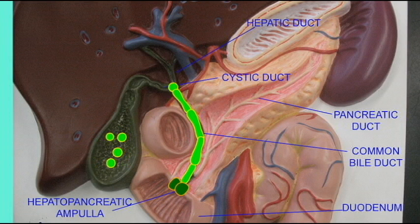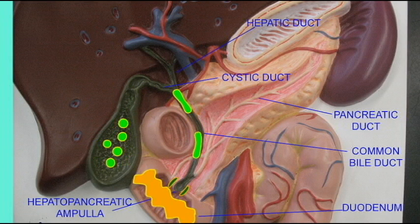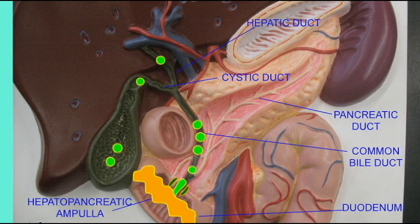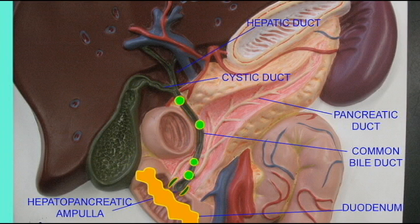Then when there is food in the small intestine, the sphincter opens and bile can pass not only from the gallbladder through the cystic duct into the common bile duct, but also from the liver through the hepatic ducts to the common bile duct.